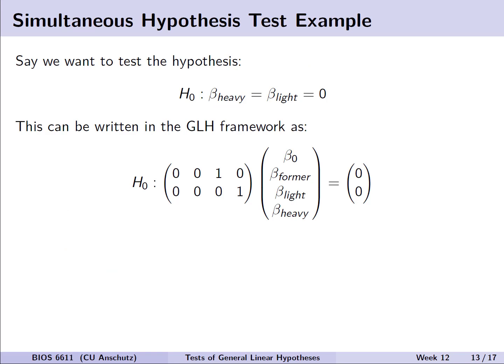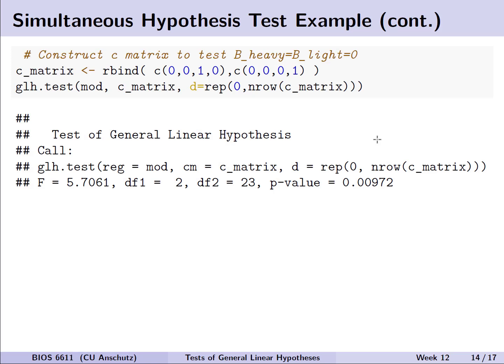We can also demonstrate an example with a simultaneous hypothesis test. Say we wanted to test the hypothesis that beta heavy equals beta light equals zero. This could be written as a C matrix that has a one in the two different rows, one corresponding to light smoker and heavy smoker, and then our D vector corresponding to values of zero in each case. We can leverage the glh.test function where we define our C matrix to be two rows for each of these hypotheses. Comparing both the light and the heavy smoker values simultaneously equal to zero, we see that the F test says there is a significant difference in at least one of those hypotheses when tested at the same time, suggesting at least one of them is significantly different from zero.